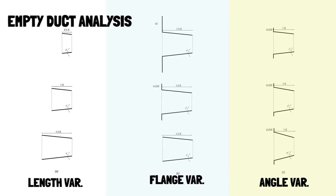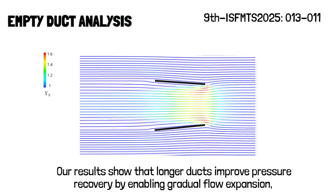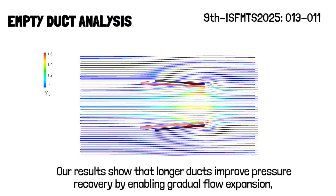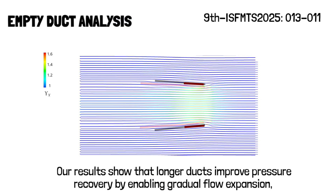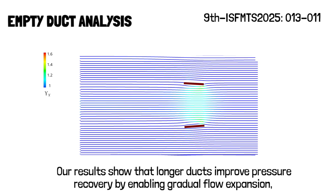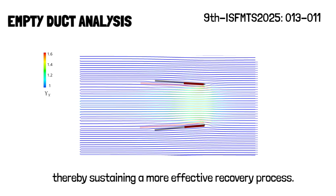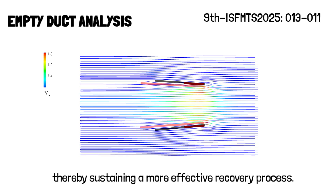The ducts were tested with varying lengths, expansion angles, and flange sizes. We examined how each parameter influenced pressure recovery, back pressure, and velocity acceleration through the duct inlet, where the rotor is typically placed. Our results show that longer ducts improve pressure recovery by enabling gradual flow expansion, thereby sustaining a more effective recovery process.